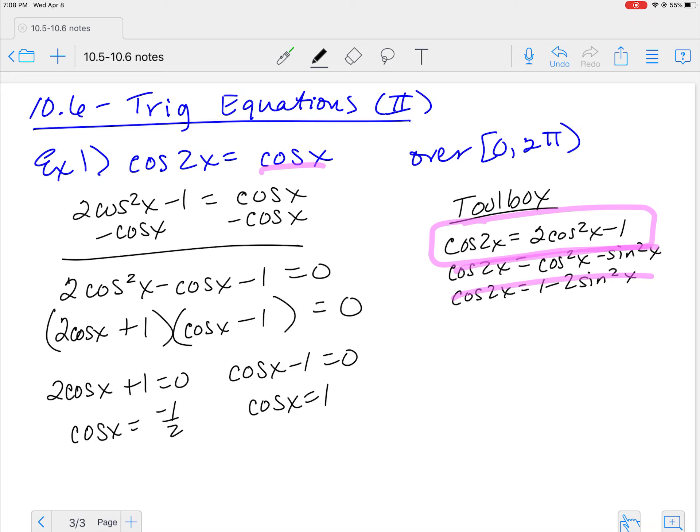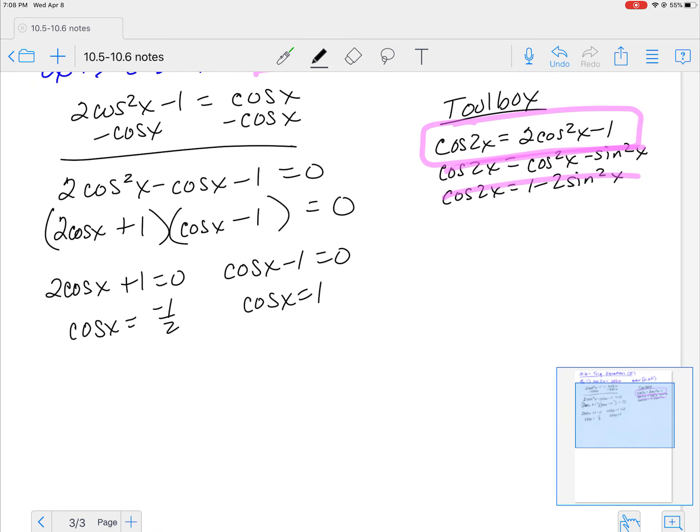Then split them up. So I actually get cos(x) = -1/2. You see where you subtract the 1, divide by 2, and cos(x) here equals positive 1. Now, go back to your unit circle. I'm going between 0 and 2π, where cosine is a negative 1/2.